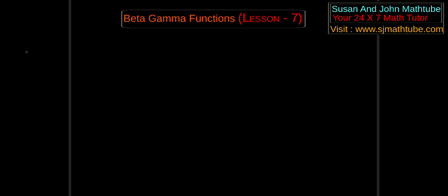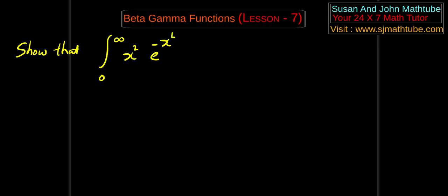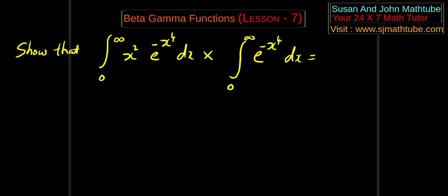Write the first question: show that the integral from 0 to infinity of x² · e^(−x⁴) dx, multiplied by the integral from 0 to infinity of e^(−x⁴) dx, is equal to π divided by 8√2.